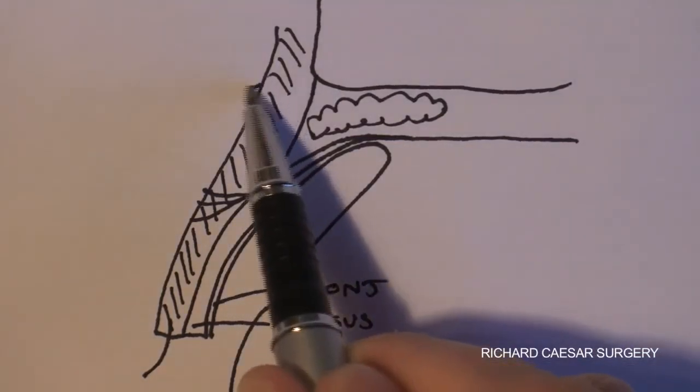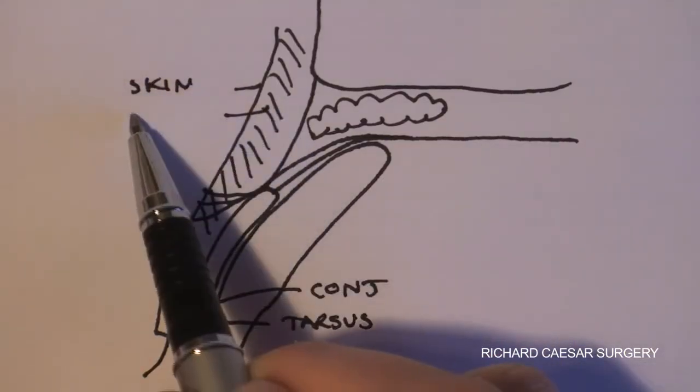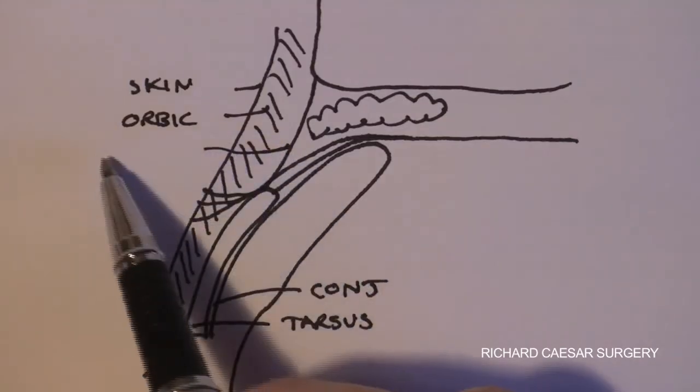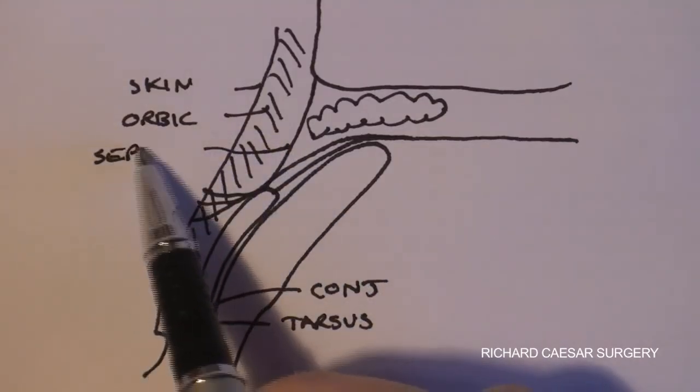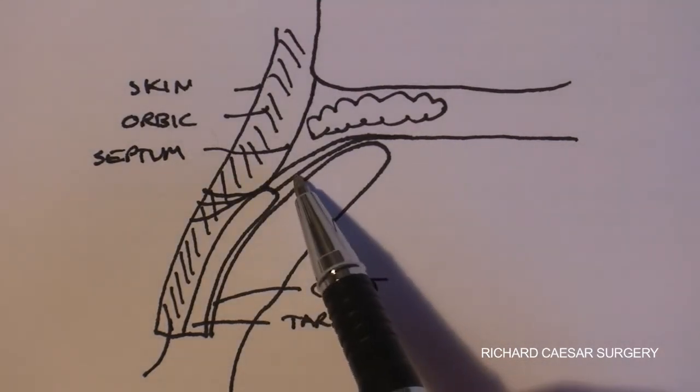Then anterior to the tarsal plate is the skin, the orbicularis and the septum, joining the superior surface of the tarsal plate to the bone.